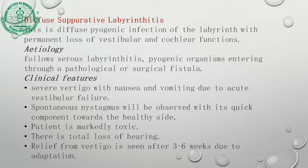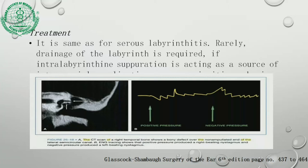Diffuse suppurative labyrinthitis is a pyogenic infection of the labyrinth with permanent loss of vestibular and cochlear function. It follows serous labyrinthitis. Clinical features: severe vertigo with nausea and vomiting due to acute vestibular failure; spontaneous nystagmus with quick component toward the healthy side; patient is markedly toxic with total loss of hearing. Relief from vertigo occurs after 3 to 6 weeks due to adaptation. Treatment is the same as for serous labyrinthitis. Rarely, drainage of the labyrinth is required if it acts as a source of ongoing infection.